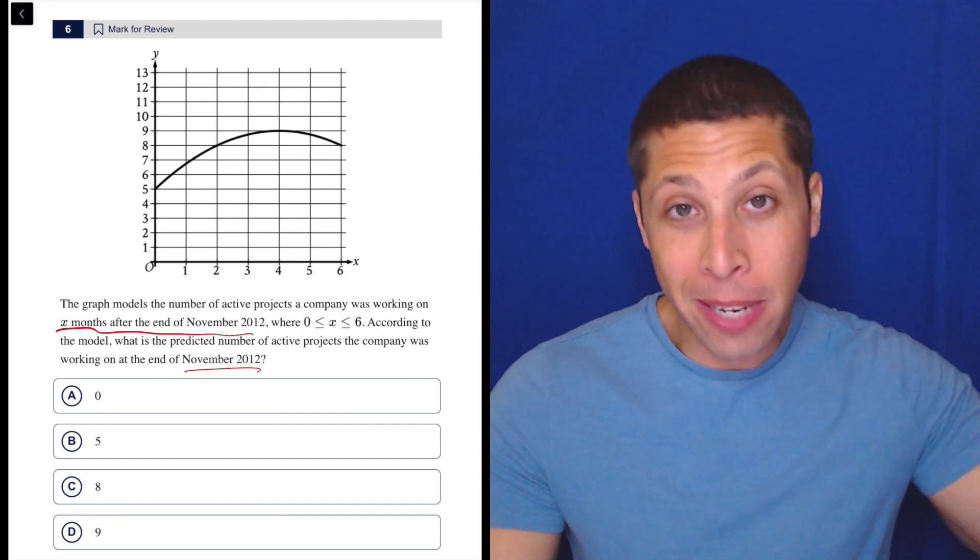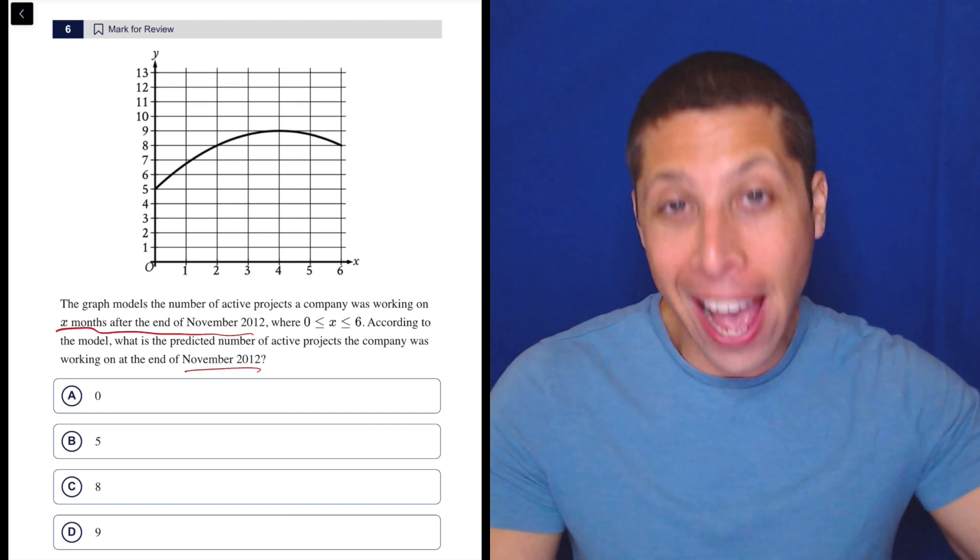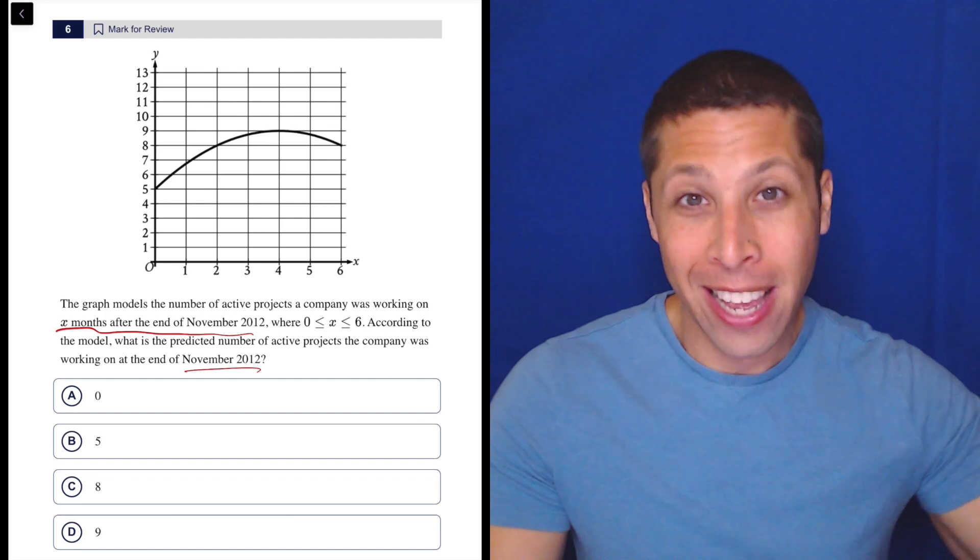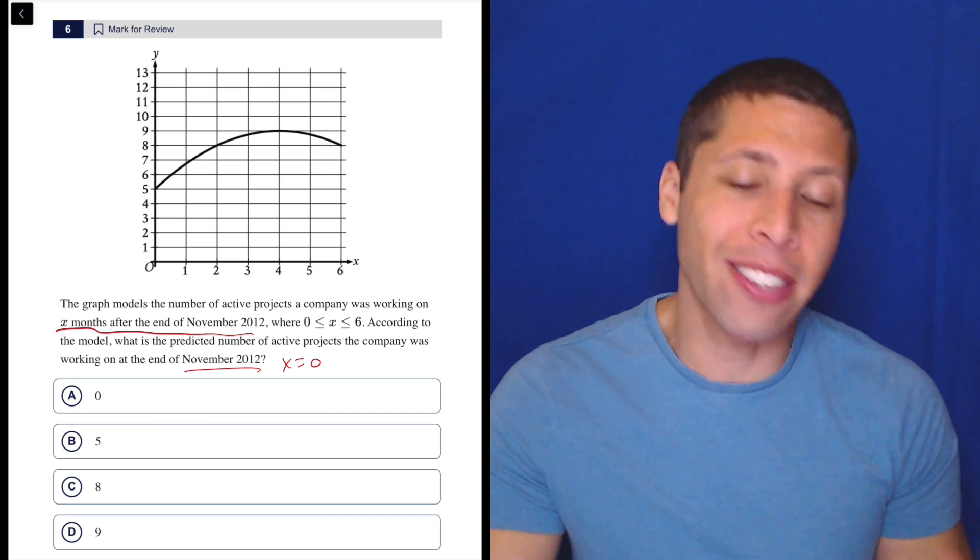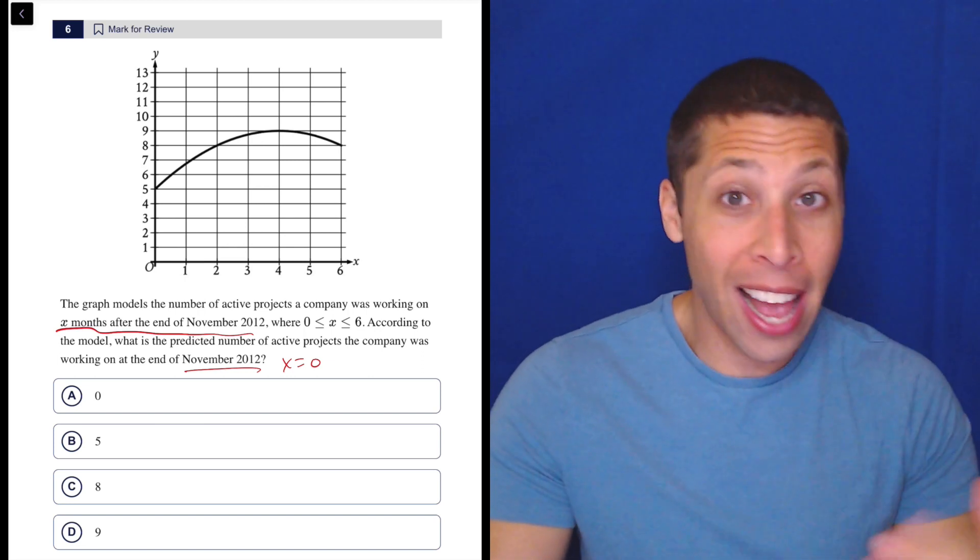Well, how many months after the end of November 2012 is the end of November 2012? It's 0, right? So this is just saying in, yes, complicated language, but still x is 0, right?